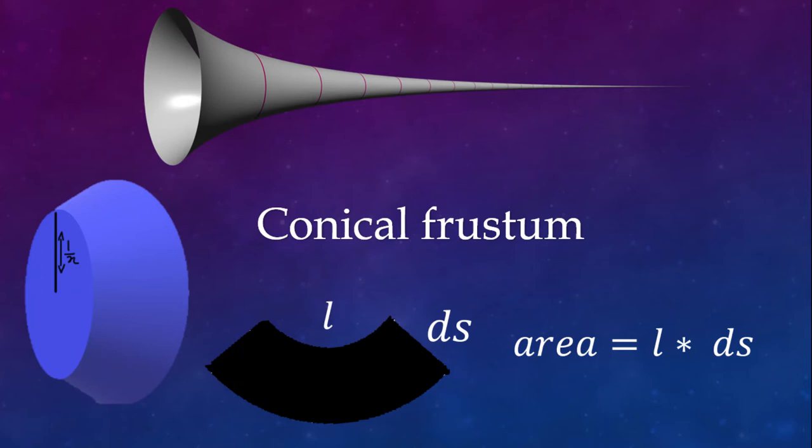A conical frustum consists of two flat faces, both of which are circles. And the surface area of the curved surface is equal to the circumference of the smaller circle multiplied by the slant height.